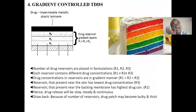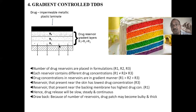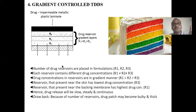The fourth formulation system is the gradient control layer system. Multiple layers — R1, R2, R3 (three reservoirs) — are used. R1 has high drug concentration, R2 has less, R3 has still less, followed by an adhesive layer. This creates a concentration gradient, hence the name 'gradient.' The problem is that having multiple drug reservoirs makes the patch bulky and increases thickness. However, with this system a slow, steady, continuous release can be achieved — it is one of the ideal systems.